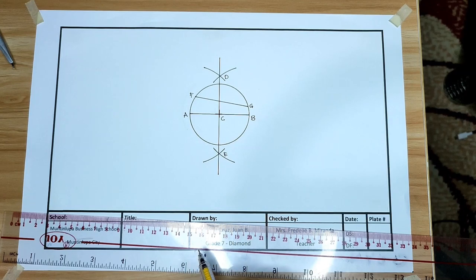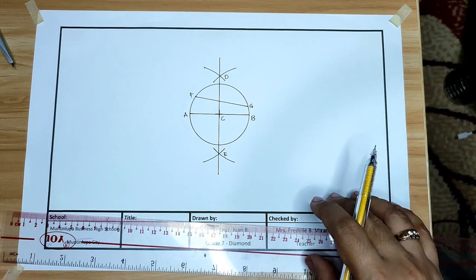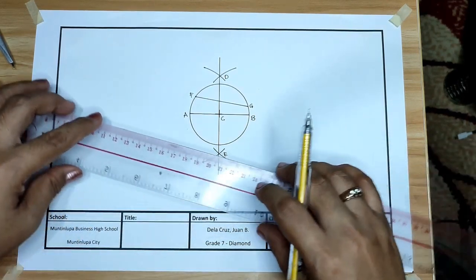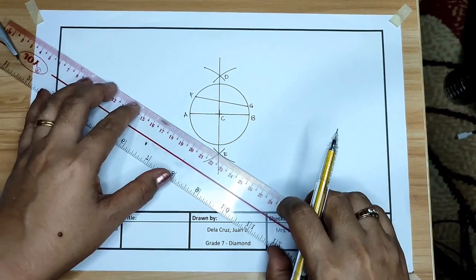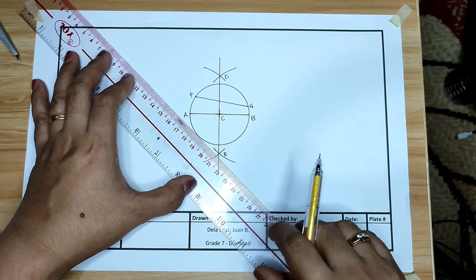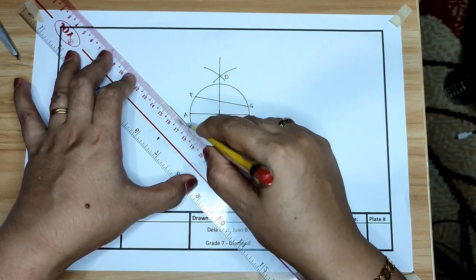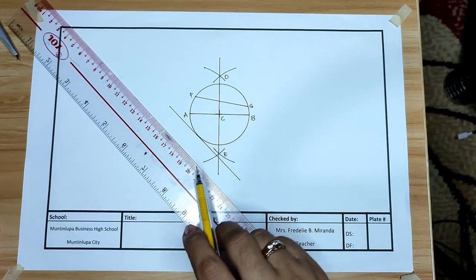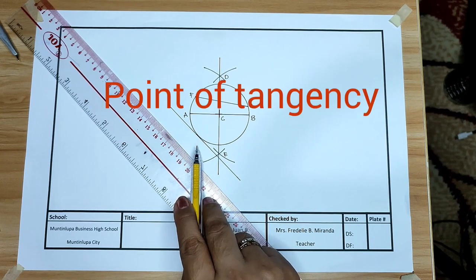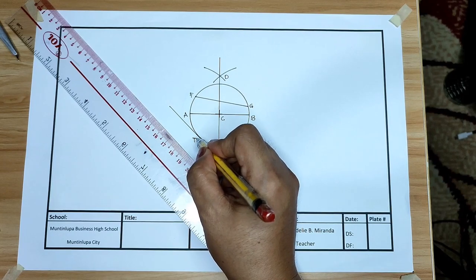Next is tangent. A line that touches the circle at one point. Let us draw here. Tangent. It should be there is a point of tangency. The line and the arc touches each other. That is tangent. This is the point of tangency. Let us name this point T.